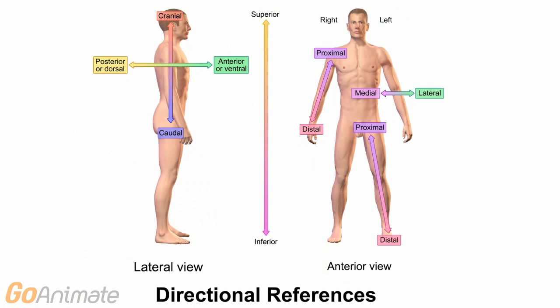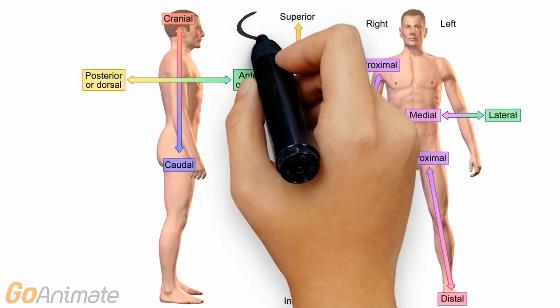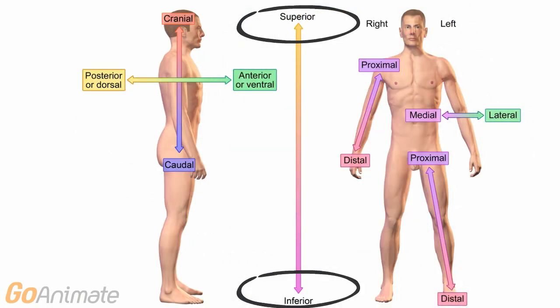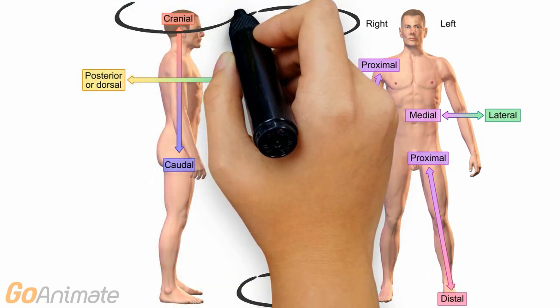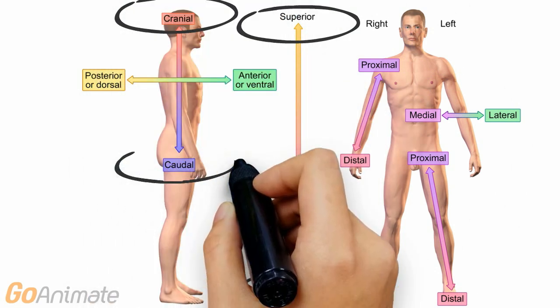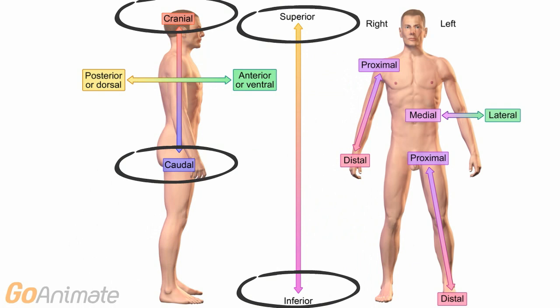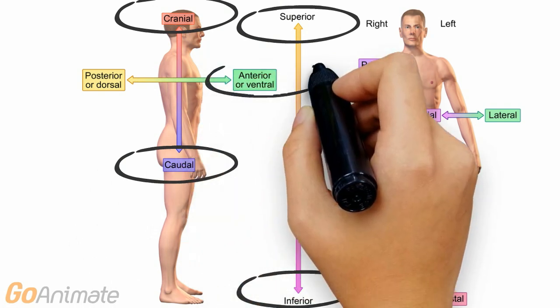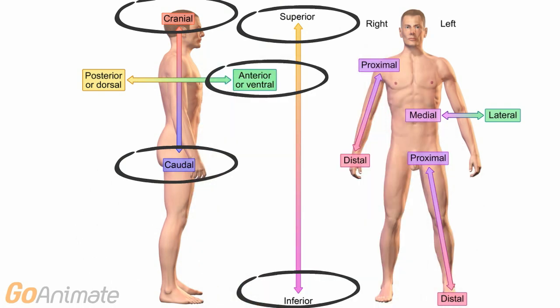Besides regional terms, there are also directional terms which allow us to relate one structure to another. For up and down, we have superior and inferior. There are also terms for toward the head or cranial and away from the head or caudal. For front to back, we have anterior which means toward the front, and posterior which means toward the back.